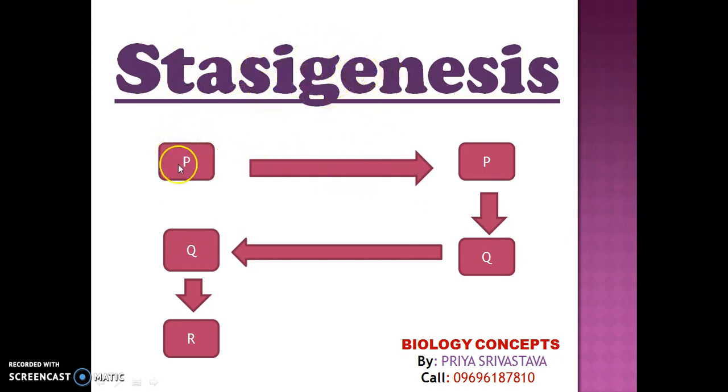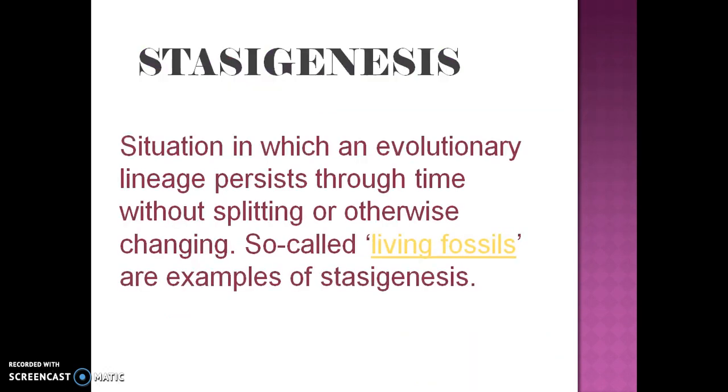This figure will definitely show what stasigenesis actually is. Stasigenesis is a situation in which an evolutionary lineage persists through time without splitting or otherwise changing. So-called living fossils are examples of stasigenesis.